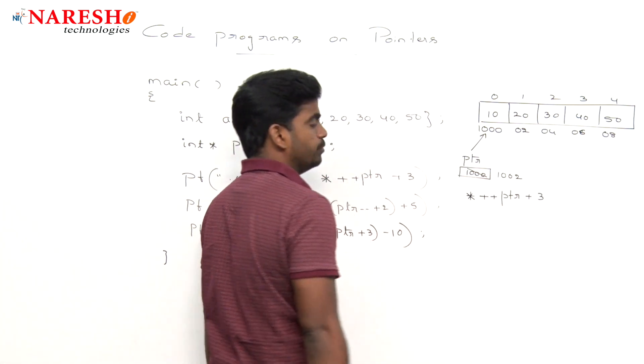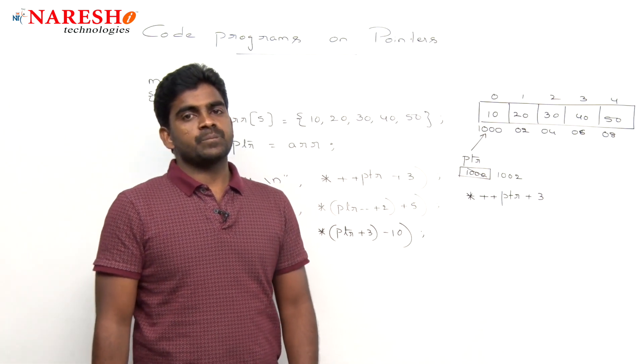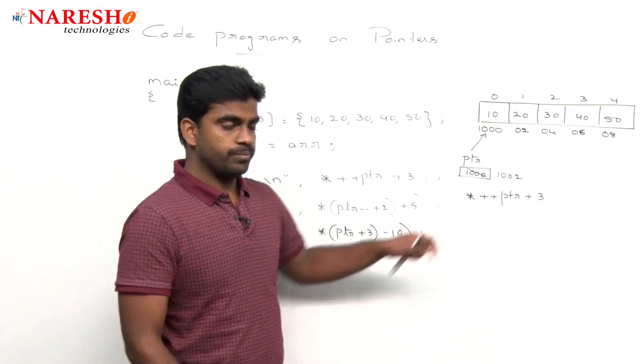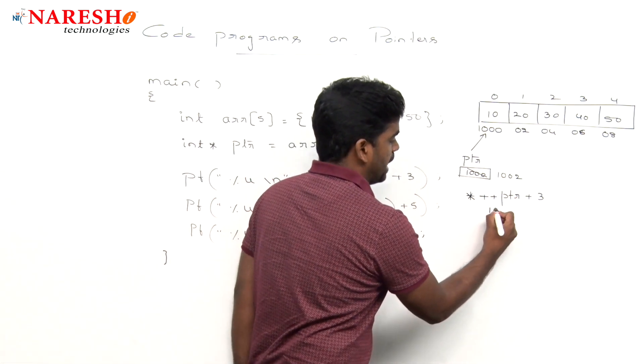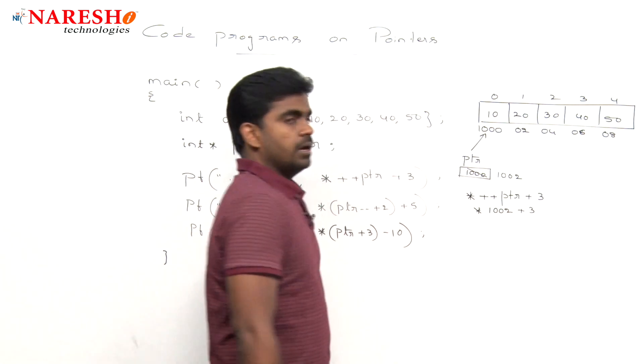This ARR is pointing and anyway that followed by ARR is storing into that PTR. So directly we can say that PTR is an address, that is the first location address and it is pointing to it.